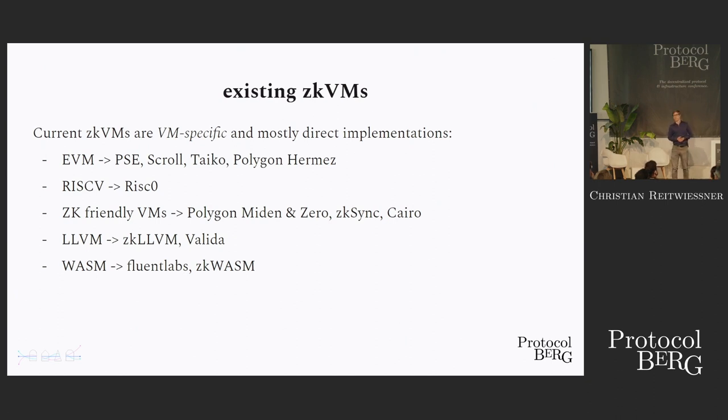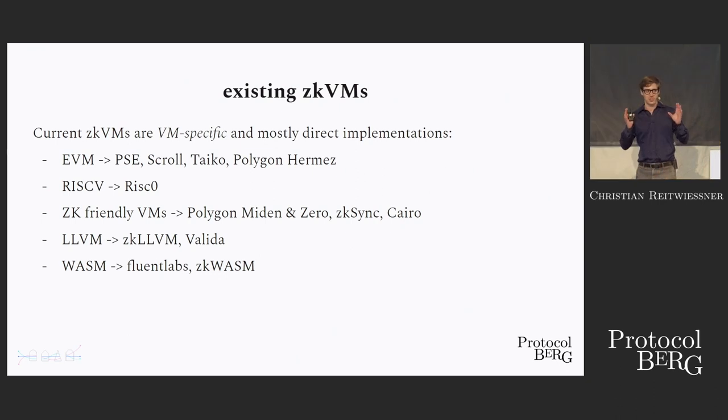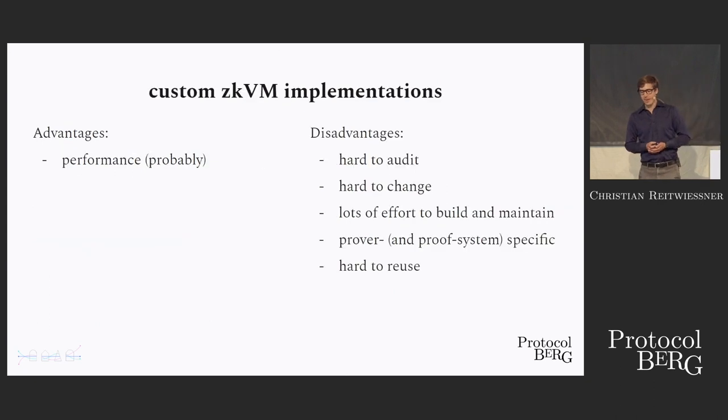Many different zero-knowledge virtual machines have been built in the past months. We don't want to build another zero-knowledge virtual machine. Instead, we want to provide a toolkit that allows you to make it easier to build these things. The problem we saw with existing ZKVMs is that they are all very specific to a certain VM. So you start out and fix an architecture and then you build your virtual machine for it. And most people also just build everything from scratch. Of course, there's an advantage to building everything from scratch and having custom fine-tuned implementations for everything. And this is performance, probably.